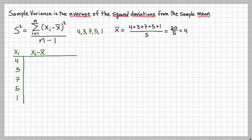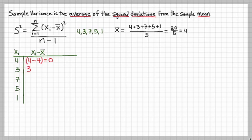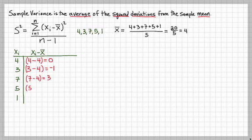The next step is to create the column for the deviations from the mean — not squared yet, just the deviation. Take each data point and subtract the mean of 4. So: 4 minus 4 equals 0; 3 minus 4 equals negative 1; 7 minus 4 equals 3; 5 minus 4 equals 1; and 1 minus 4 equals negative 3.